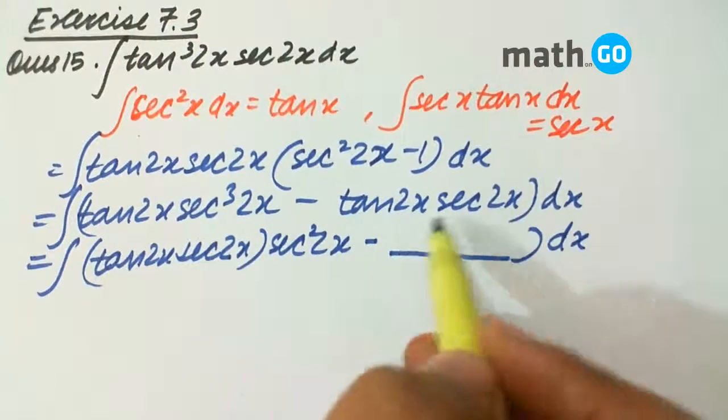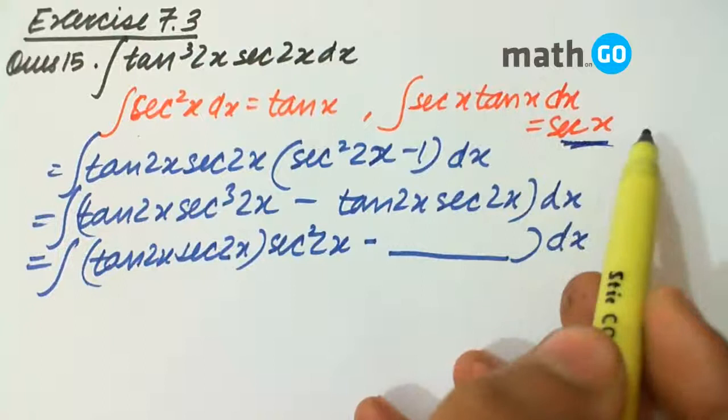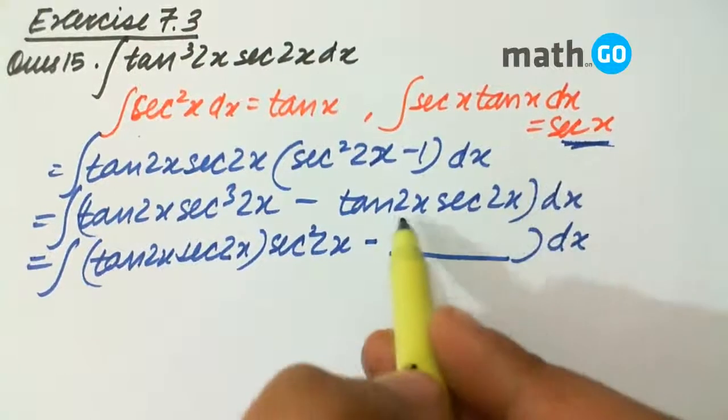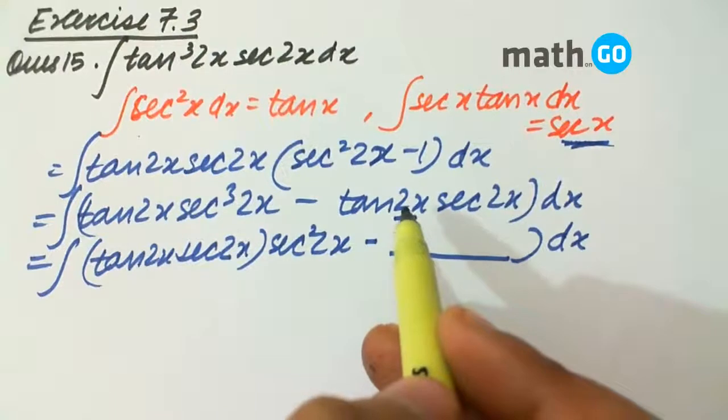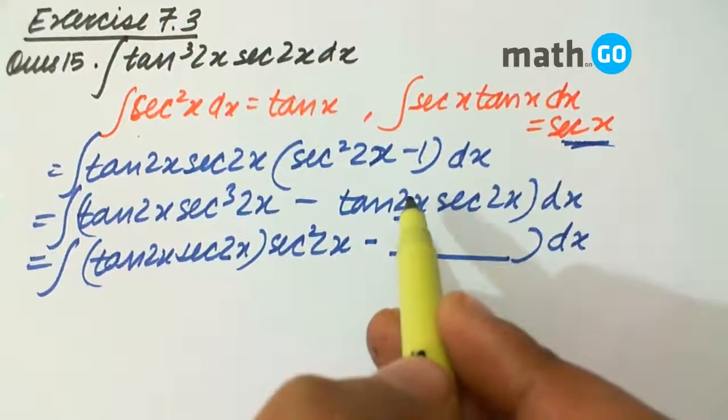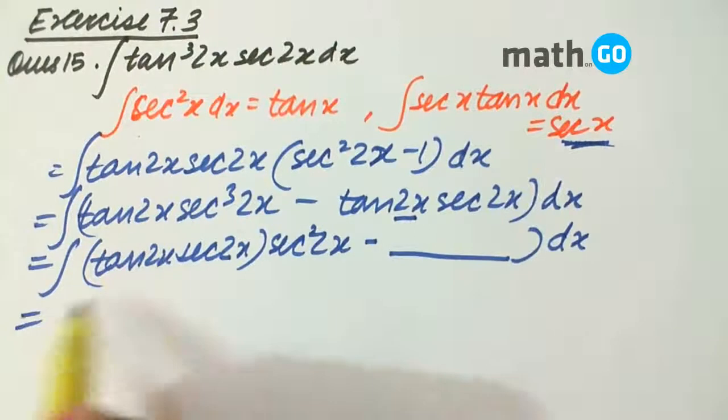So, this easily turns to sec 2x by 2, because in integration we divide the number, unlike in differentiation where we multiply it. Here,